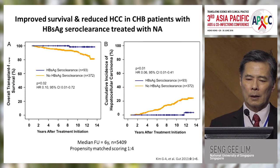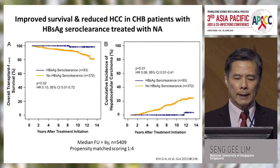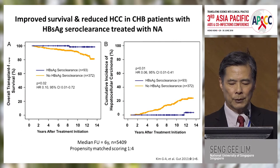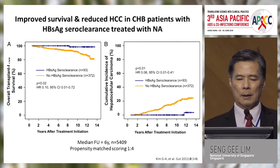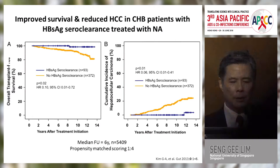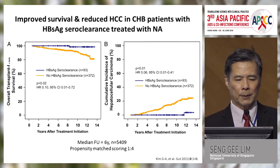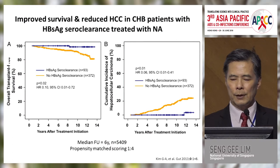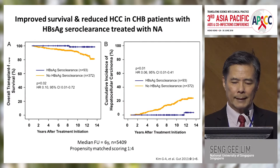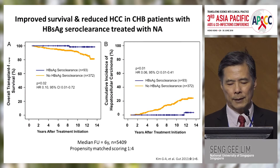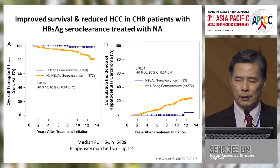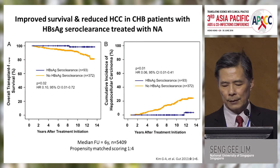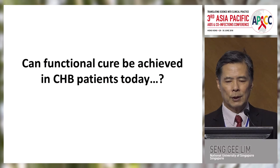Some data shows us that if patients lose s-antigen — the definition of functional cure — they actually have improved clinical outcomes. In a large study of about 5,500 patients followed over a mean of six years with overall follow-up of 14 years, patients with s-antigen seroclearance had almost 100% survival, whereas those without s-antigen clearance had survival of only about 80% — this is transplant-free survival. In the right-hand panel, those with s-antigen loss had very low rates of liver cancer, less than 5%, while those without s-antigen loss had a rate over 20% at 14 years, confirming that s-antigen loss is significantly associated with improved clinical outcomes.